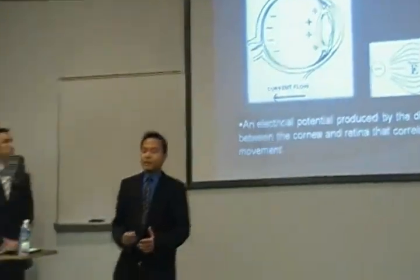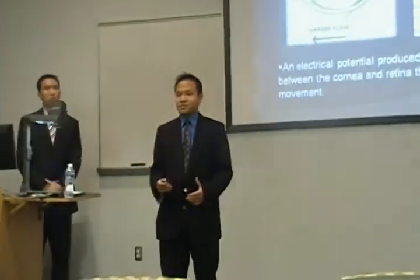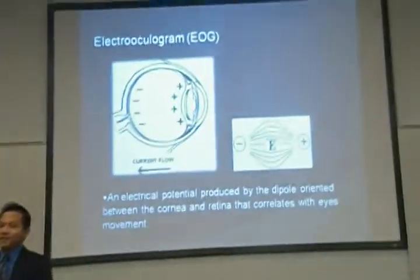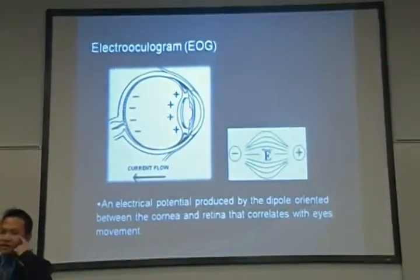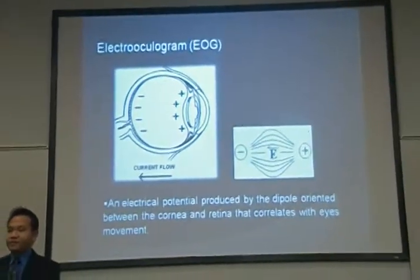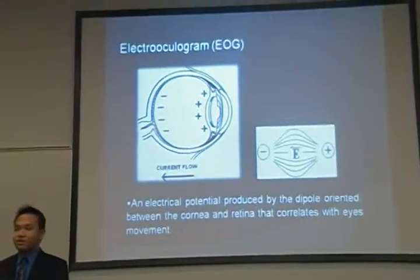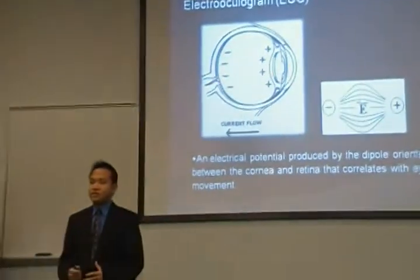The way that we can capture a person's eye gaze is by using a biopotential generated from our eyes — the electro-oculogram, also known as EOG for short.